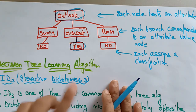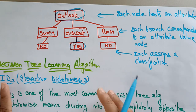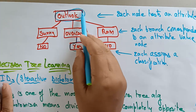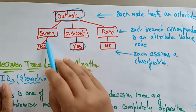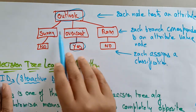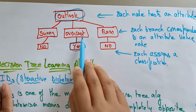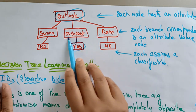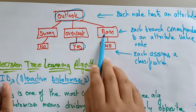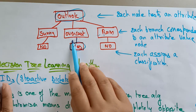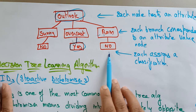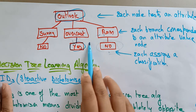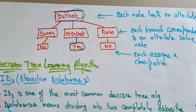This is decision tree learning. Each node tests an attribute, each branch corresponds to an attribute value node, and each leaf assigns some classification.